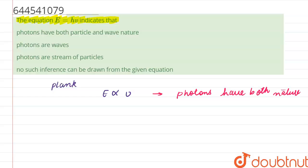When I say both nature, this means they have either particle nature or wave nature. Then we got the constant of proportionality, which is Planck's constant.